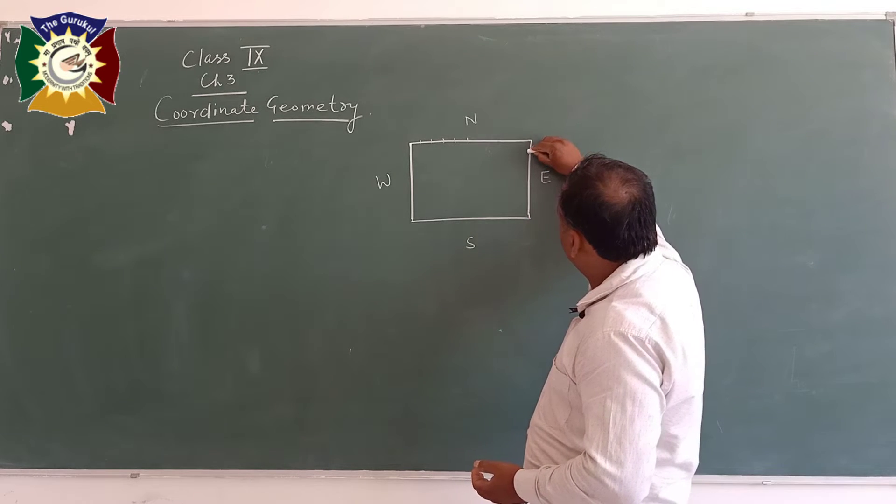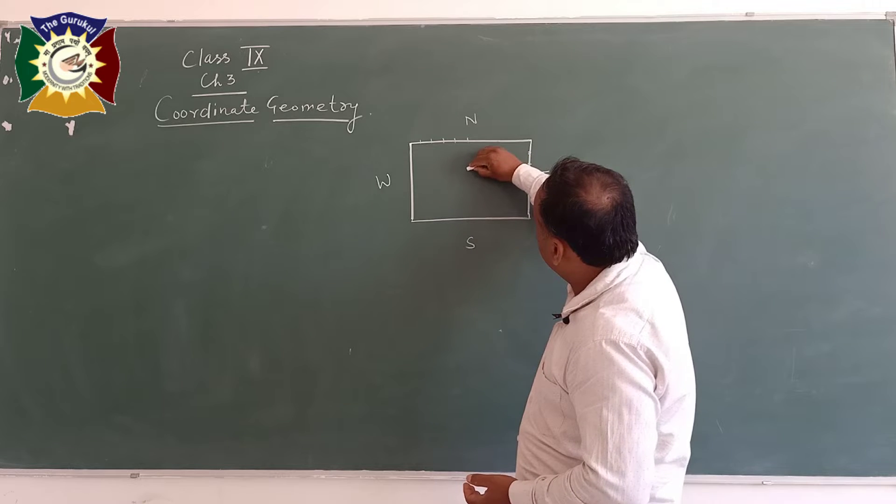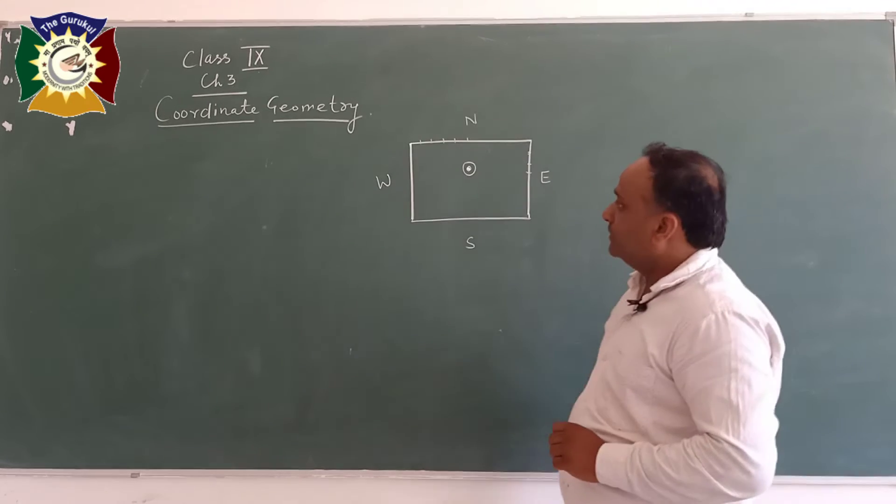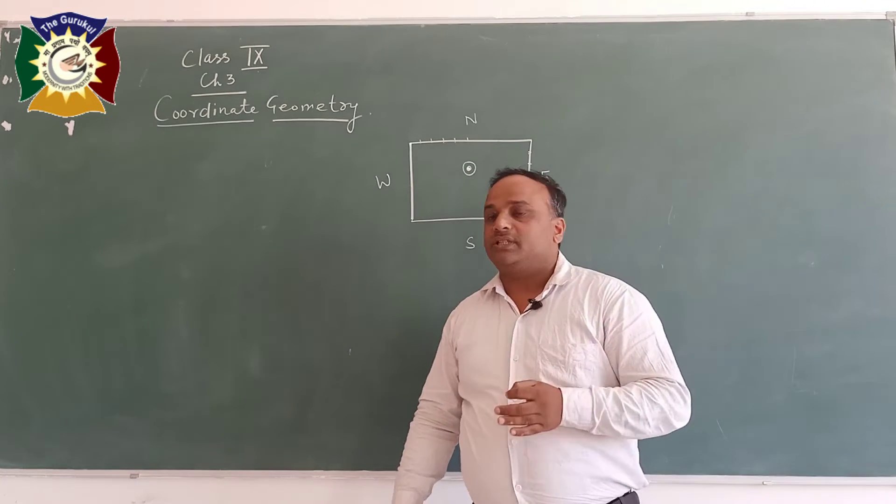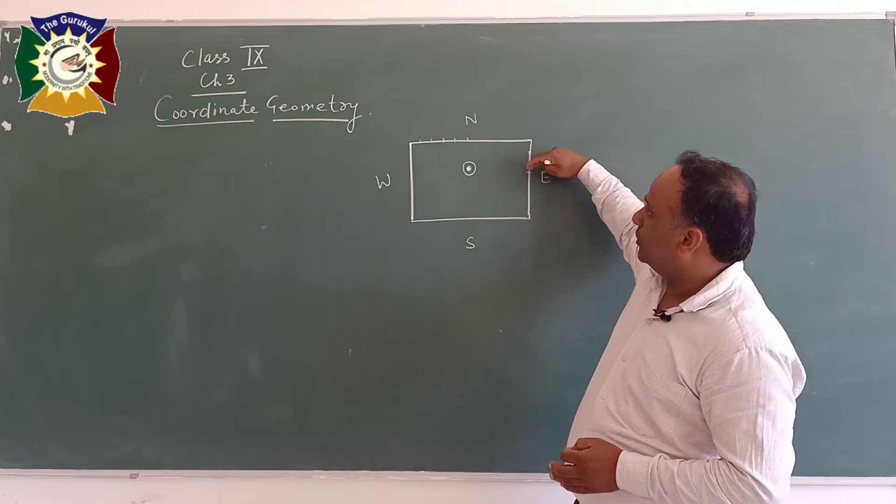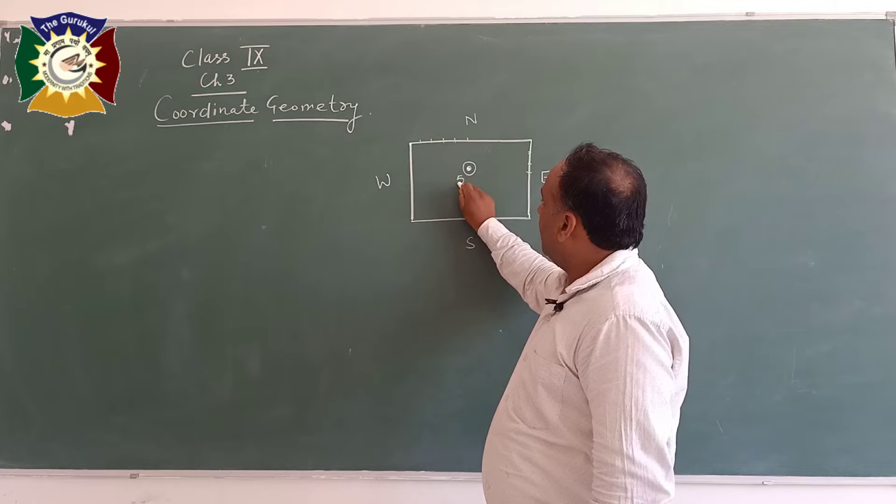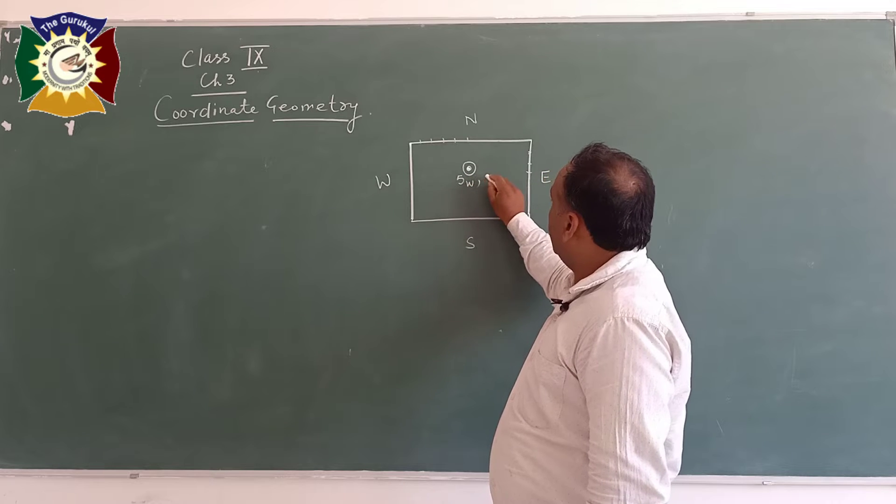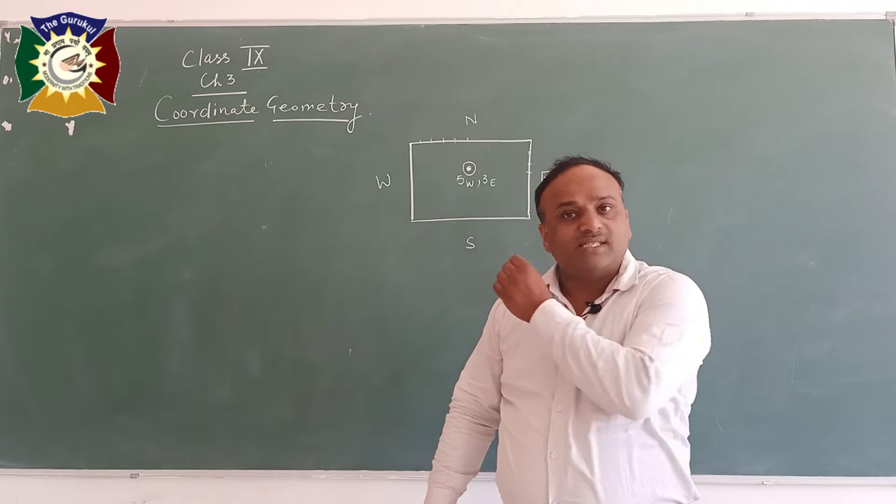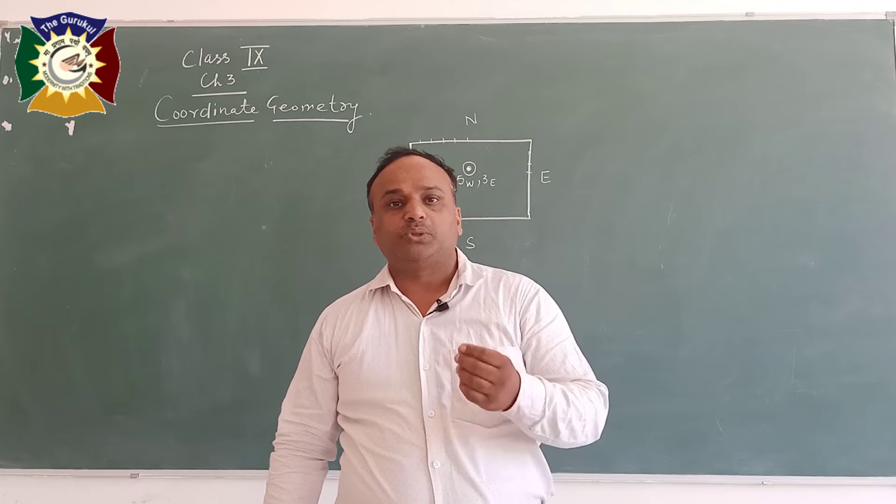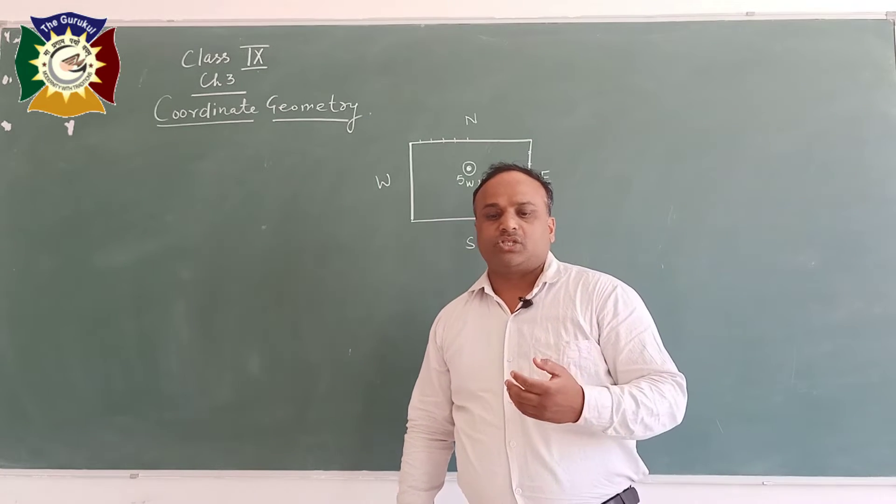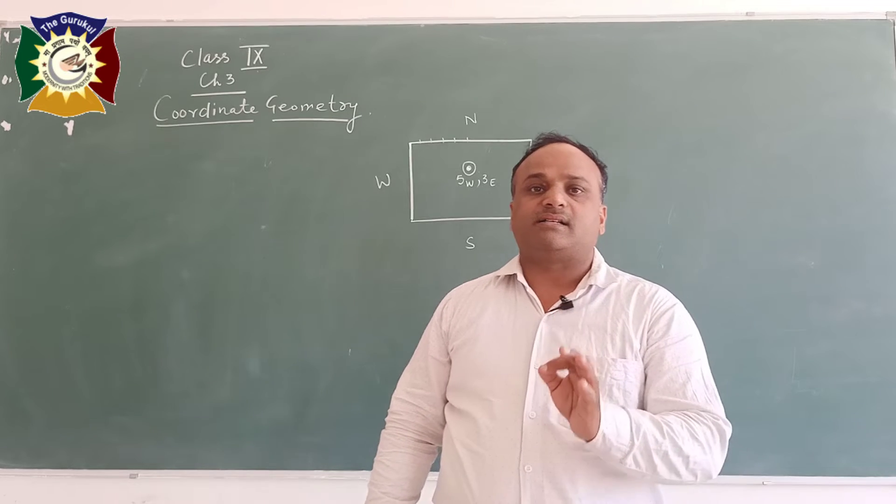Five meters away from west and three meters away from north. So we will start like this: one, two, three. So the position of that gold will be here. Exactly that position is five meters away from west and three meters away from north. So how can we write that? Five west and three east. This is just a very simple example to show how coordinate geometry is essential.